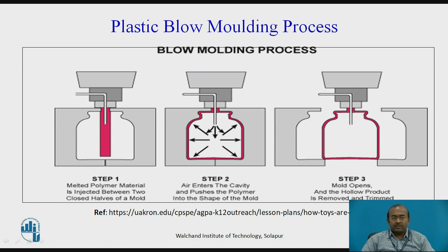The plastic blow molding process is normally used to produce hollow parts. In three steps we can see how the blow molding process works. In step one, you can observe that the red plastic raw material is present in the form of a stick, called the parison stick. The mold halves are divided into two parts. The parison stick is inserted into the mold cavity, and the melted polymer material is injected between the two closed halves of the mold.